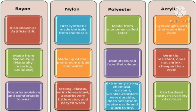Now let's see the characteristics of rayon. Rayon is also known as artificial silk. It is made from wood pulp and naturally occurring cellulose. It absorbs moisture and is comfortable to wear.